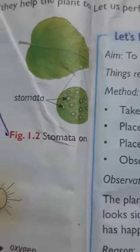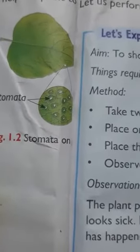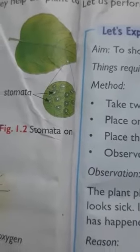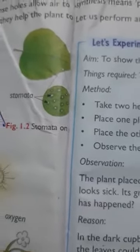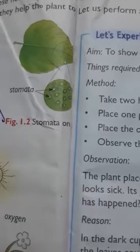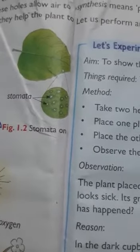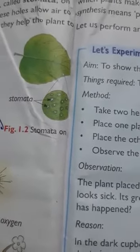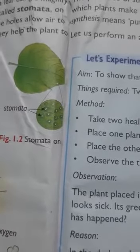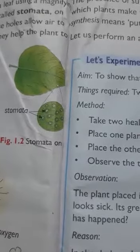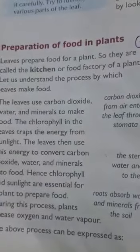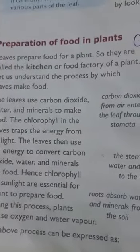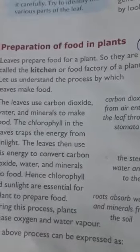Different plants have different kinds of leaves. We can generally identify a plant by looking at its leaf — for example, a mango leaf looks different from a guava leaf. By seeing the leaf alone we can identify which plant it is.